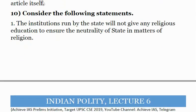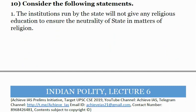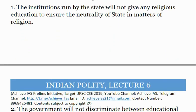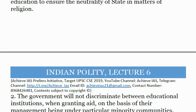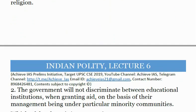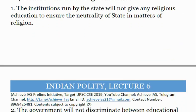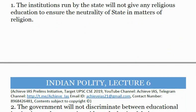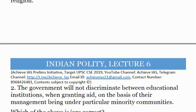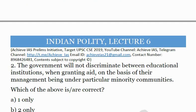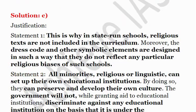The tenth and final question: consider two statements. First, institutions run by the state will not give any religious education, to ensure the neutrality of the state in matters of religion. Second, the government will not discriminate between educational institutions when granting aid on the basis of their management being under a particular minority community. Both statements are correct — state-run educational institutions cannot provide religious instruction as we are a secular state, and while granting aid, the government cannot discriminate against any educational institution managed by a particular minority community. So the answer is C — both one and two.